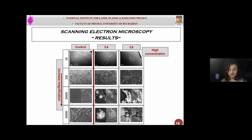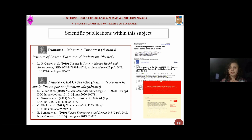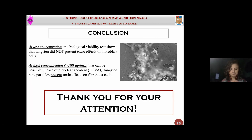Therefore, tungsten nanoparticles certainly affect cell viability. These results were published in a book chapter. Articles on the same subject were also published by a group from France supervised by Mr. Grissoria, with whom we have a very close collaboration. Moreover, some of the nanoparticles studied were synthesized in our group. In conclusion, with this study I was able to discover that tungsten nanoparticles are toxic for tissue cells only at higher concentrations, which means above 100 micrograms per milliliter. Thank you for your attention.